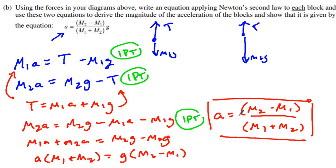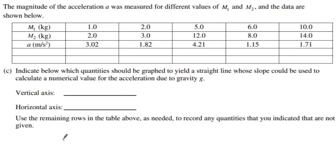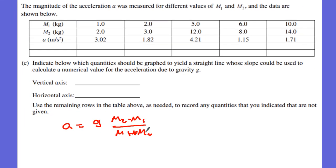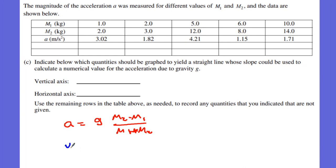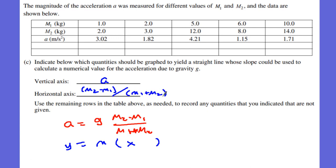Don't forget the G that was factored out — it belongs in the numerator. So acceleration equals G times (M2 minus M1) over (M1 plus M2). This is in a y equals mx plus b linear format. The vertical axis is acceleration, and the horizontal axis is (M2 minus M1) divided by (M1 plus M2).